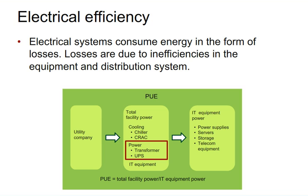Now turning to electrical efficiency. One of the key metrics in measuring efficiency in data centers is PUE — power utilization effectiveness, basically total power over IT power. When people look to lower their PUE, they generally look towards the cooling side. But the electrical system also consumes energy in the form of losses due to inefficiencies — the heat given off by the equipment on the distribution system.